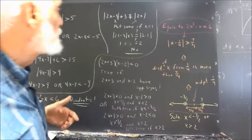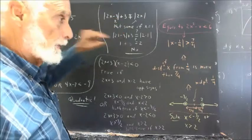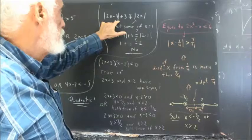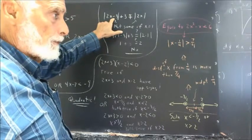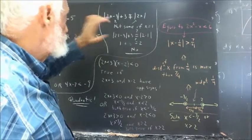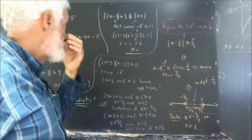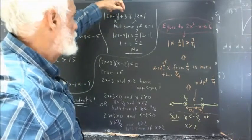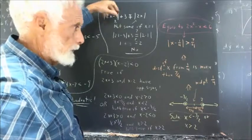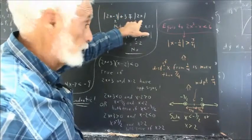Now, if we have the expression absolute value of 2x minus 3, someone tried adding 3 to it, using the idea that the negative 3 inside and the added 3 would cancel, reducing it to just the absolute value of 2x.